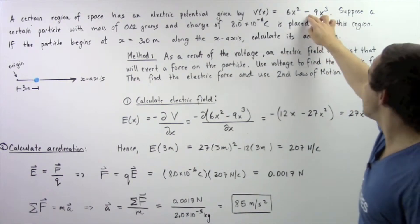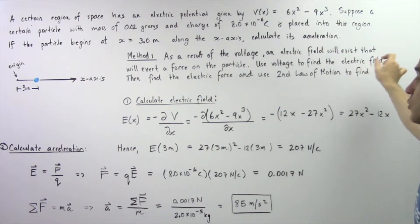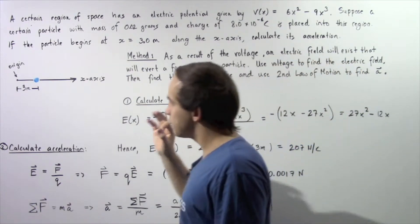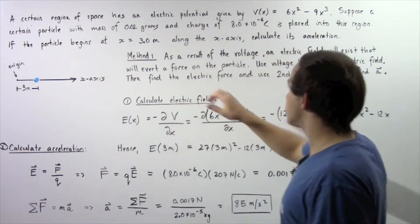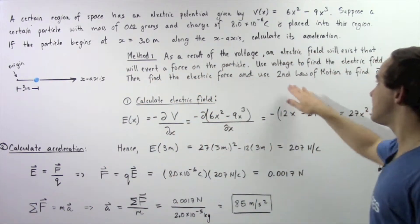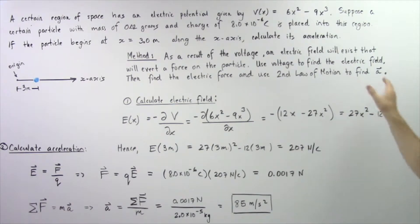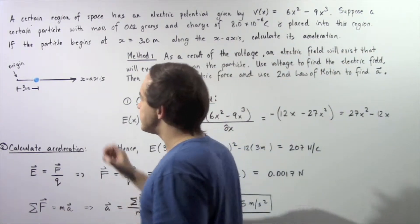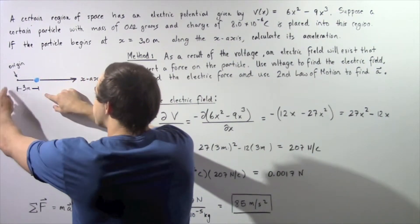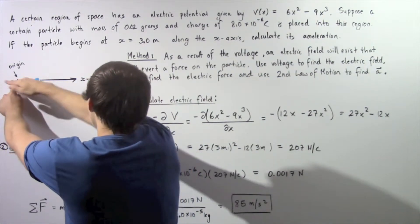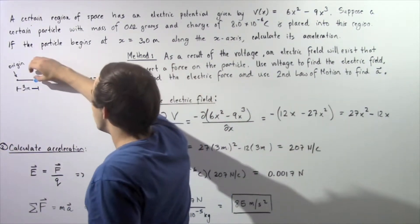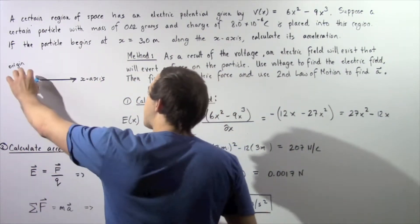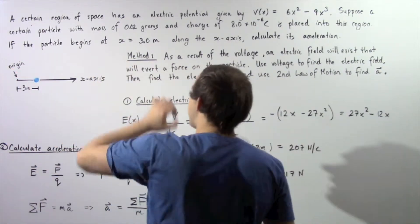We can use this voltage to calculate the electric field, then use the electric field to calculate the electric force, and then using the electric force and the second law of motion, we can calculate the acceleration. We take our particle and place it 3 meters away from the origin along our x axis, release it, and the electric field will create a force that will create acceleration.